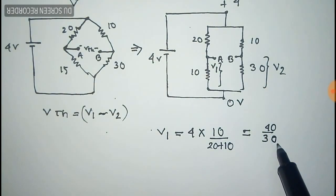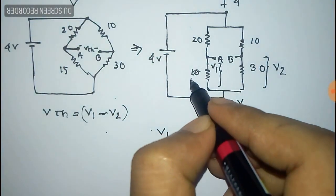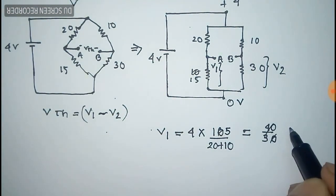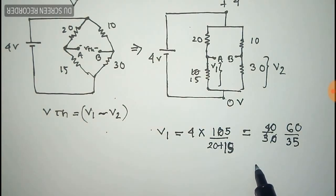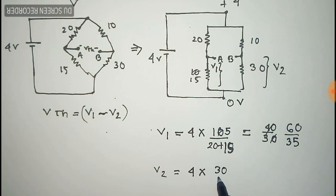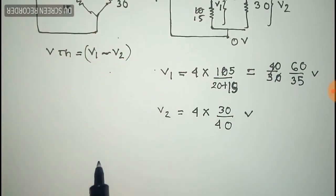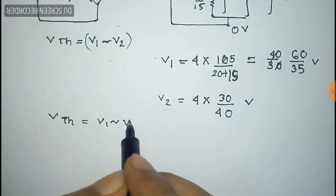Correcting the value: this should be 15 ohm, not the previous figure. So V1 is 4 into 15 by 35, which gives 60 by 35 volts, approximately 1.714 volts. V2 exists due to the 4 volt source in the 30 ohm resistance: V2 equals 4 into 30 by the total resistance 30 plus 10, which equals 4 into 30 by 40 volts. Now we can calculate V_thevenin equal to V1 minus V2.